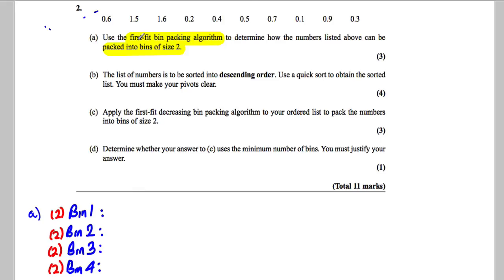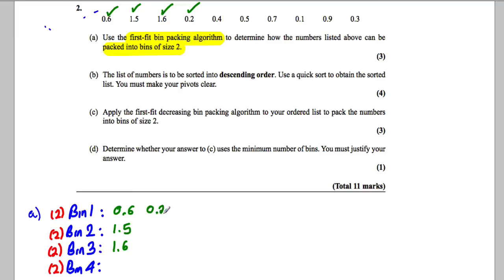With the First Fit algorithm, we take numbers as we see them. The 0.6 can go in bin one — that leaves 1.4 remaining. The 1.5 can't go there because it would exceed two, so 1.5 must go in bin two. Then the 1.6 can't go in bin one or bin two, so we put 1.6 in bin three.